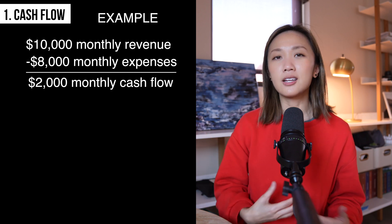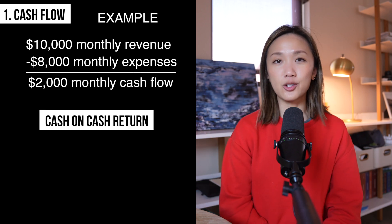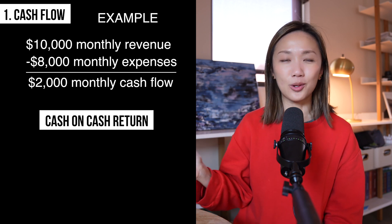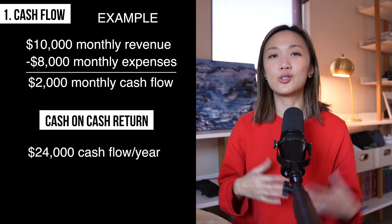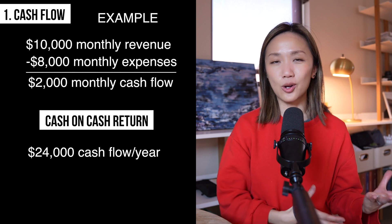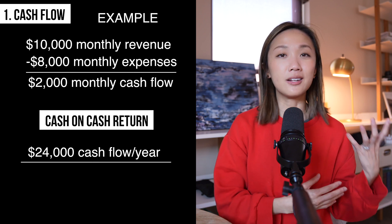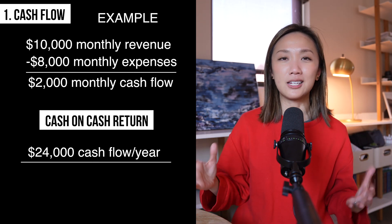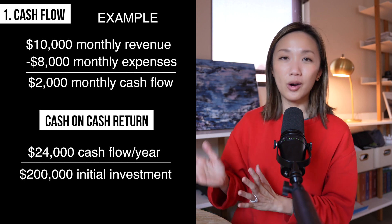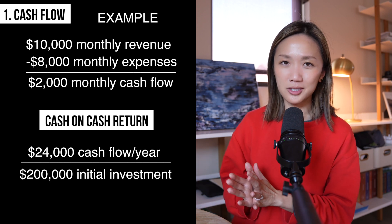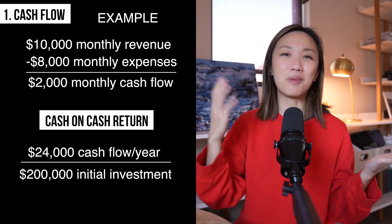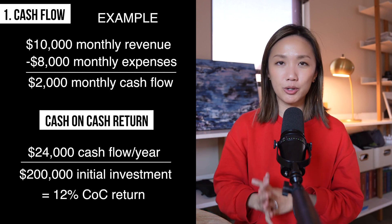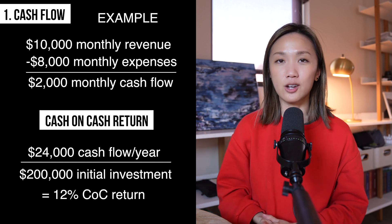Related to this metric is the cash on cash return. Using that same example of $2,000 of cash flow per month, that is $24,000 per year. If your initial upfront investment into this property was $200,000, then you would divide $24,000 by $200,000 and end up with a 12% cash on cash return.